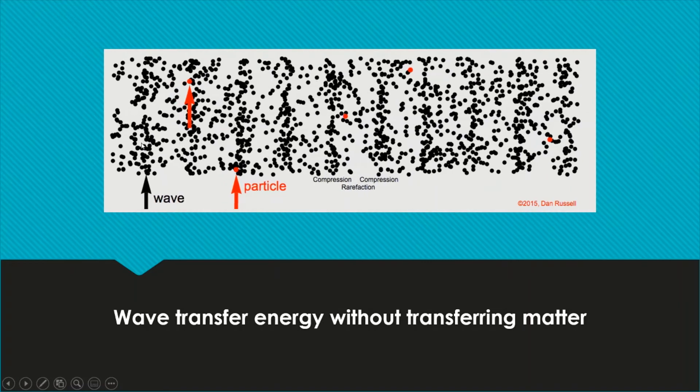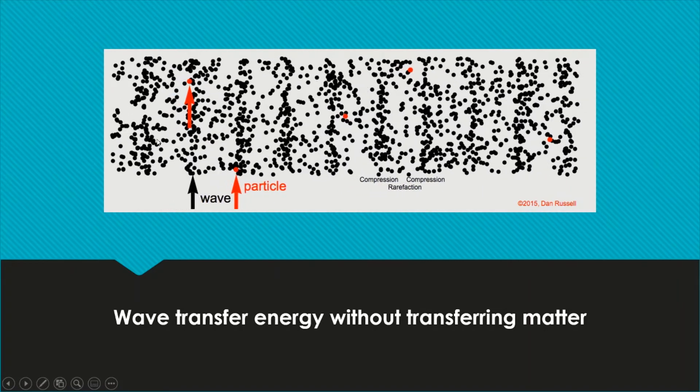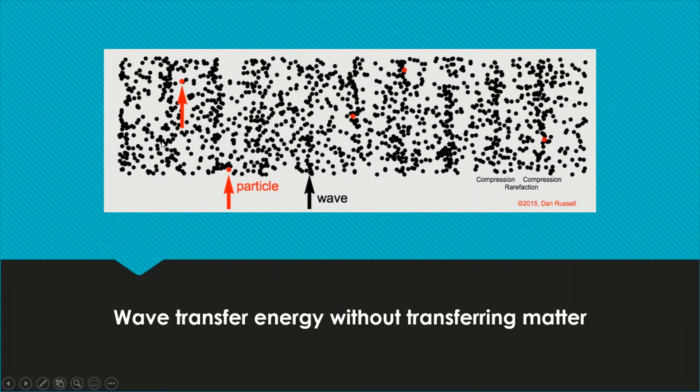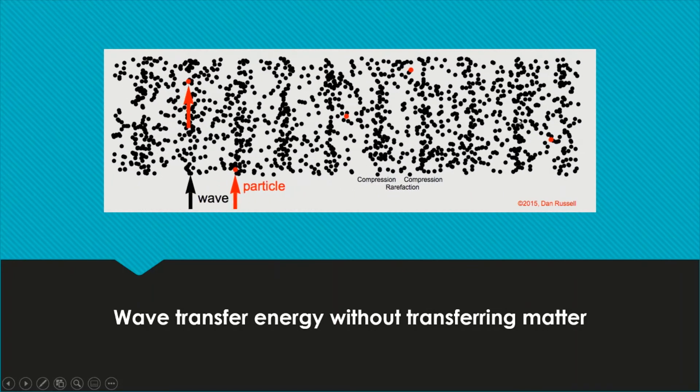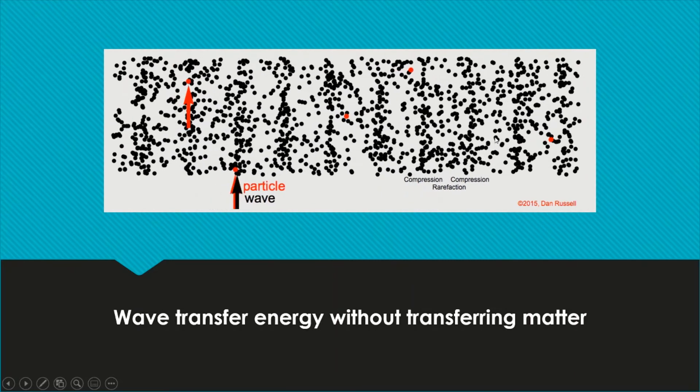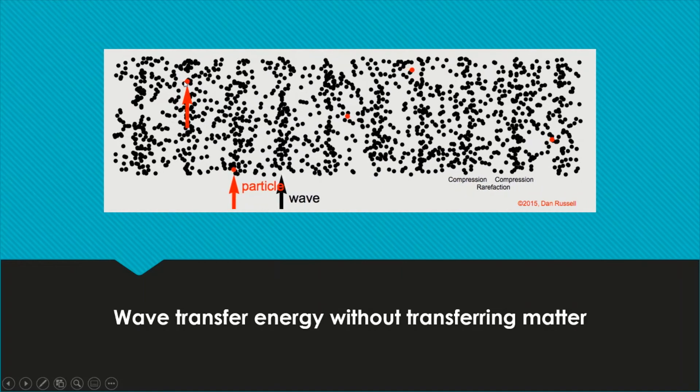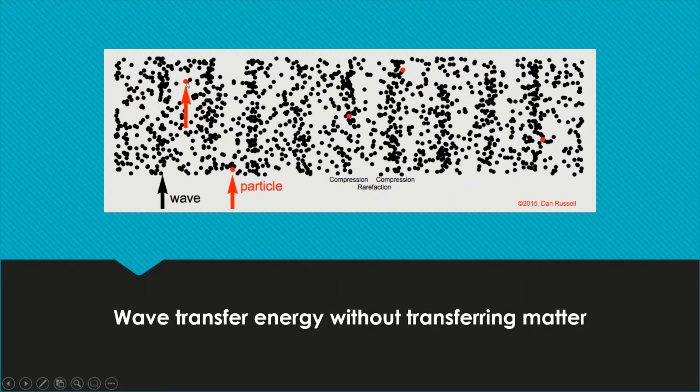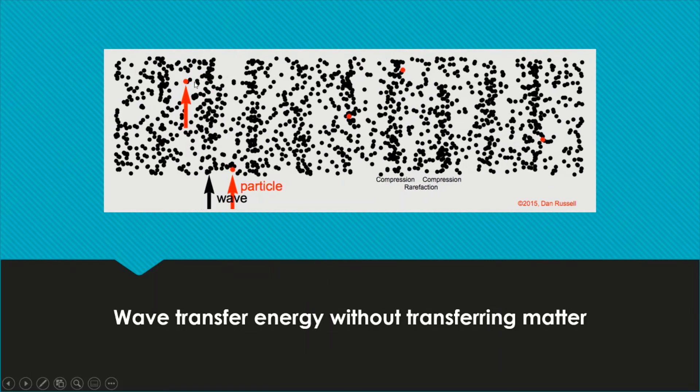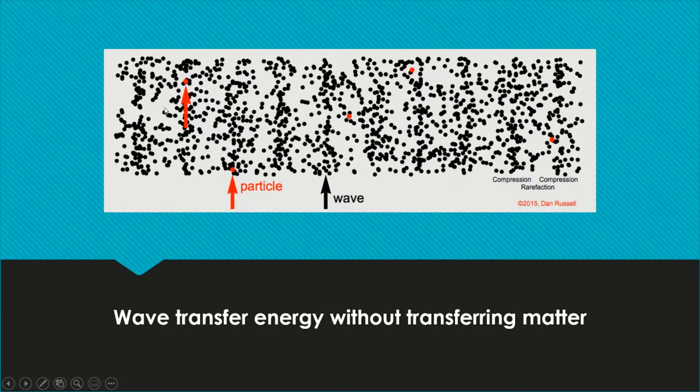You can see that the wave, there is something that is moving forward. This something that is moving forward is the energy. Wave carries the energy forward from left to right. But the dots, let's look at one black dot which I've already colored red. You see this dot, what is the movement? It is moving forward, backward, forward and backward. But it does not move together with the energy of the wave until the end.